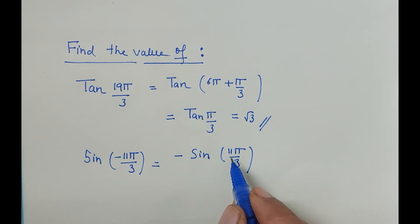We will write minus sine 4π minus π by 3 because we want 11. 3 fours are 12, and when one more π is subtracted from 12π, it will be 11π only. Here we can see this is nothing but an integral multiple of 360°.